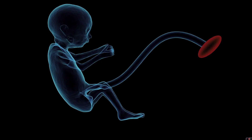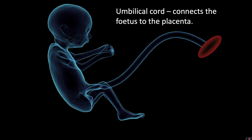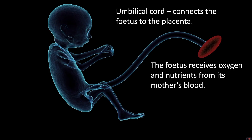Some of the cells at the very beginning of the division will go on to produce the placenta that attaches to the uterus wall. The umbilical cord grows, which connects the fetus to the placenta. The fetus receives oxygen and nutrients from its mother's blood, all because of the connection at the placenta.